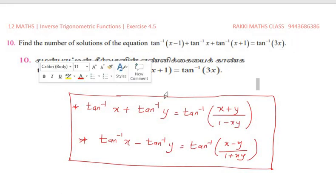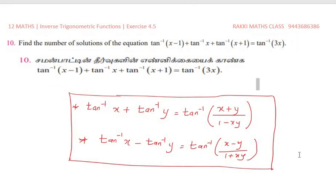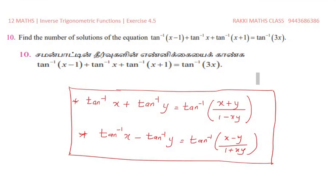Find the number of solutions of the equation tan inverse of (x minus 1) plus tan inverse of x plus tan inverse of (x plus 1) equal to tan inverse of 3x. The number of solutions could be one solution, two solutions, three, or four solutions. We will solve it.